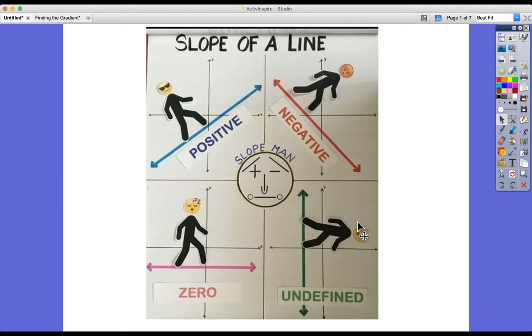One of the ingredients for that is to find the gradient. We can see here we've got slope man. This is a nice image that I found from a simple Google search. Slope man is positive when he's going from bottom left to top right, heading up that hill. He's negative when he's having to go back down in that direction. He's zero when he's just going on a horizontal line, and undefined when he's having to go up or down a vertical line.